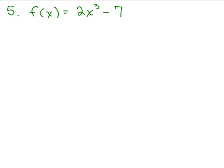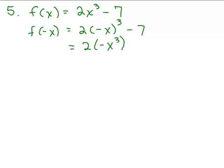All right, here's our next one. F of x equals 2x cubed minus 7. So we find out what f of negative x is by replacing x with negative x. Negative x to the third power is just negative x cubed, so that gives us negative 2x cubed minus 7. The question is: is that exactly the same as f of x?